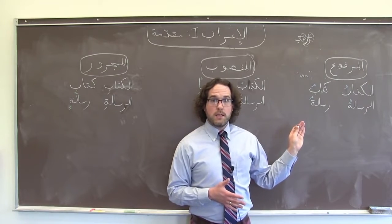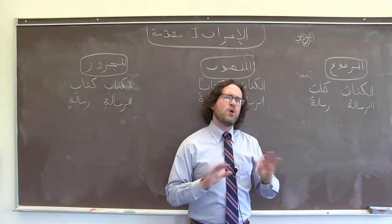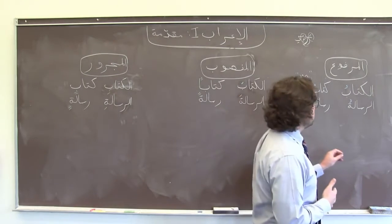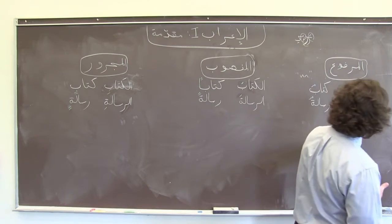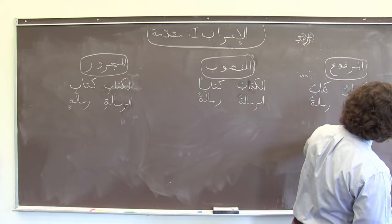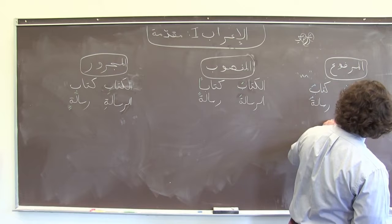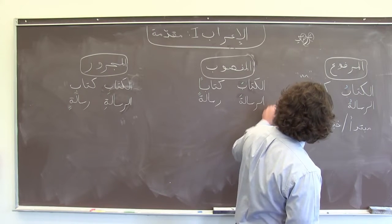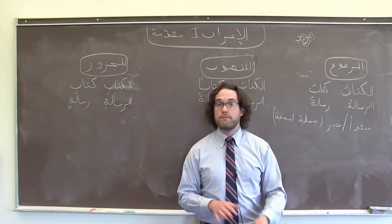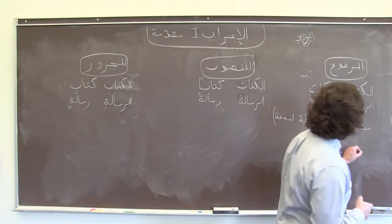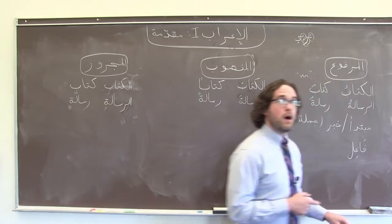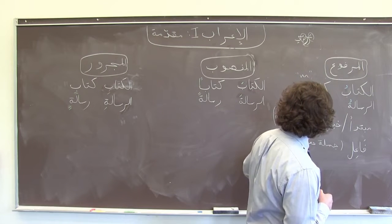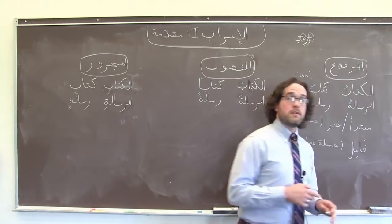Where we see مرفوع most commonly is in a default position. If there are no other circumstances in the sentence that make our noun have to be a different case ending, it's probably going to be مرفوع. So that means the subject and predicate of a nominative sentence — a جملة إسمية — what we call the مبتدأ and the خبر. It also marks the subject of a verb, the فاعل — the doer of the verb — in a جملة فعلية.